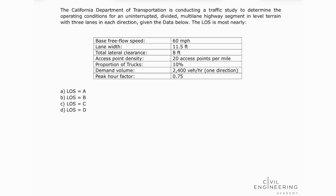So let's go ahead and dive into this problem. The problem states: the California Department of Transportation is conducting a traffic study to determine the operating conditions for an uninterrupted divided multilane highway segment in level terrain with three lanes in each direction. Given the data below, the level of service is most nearly.